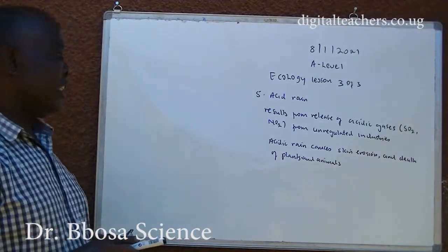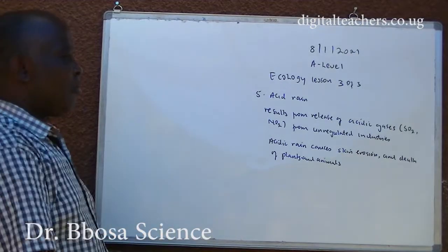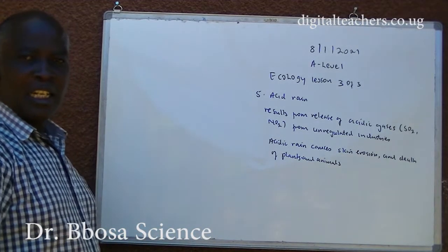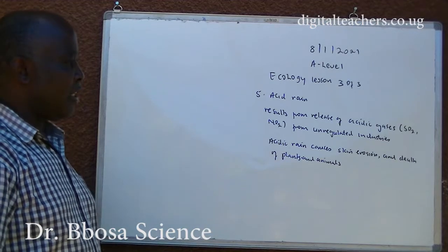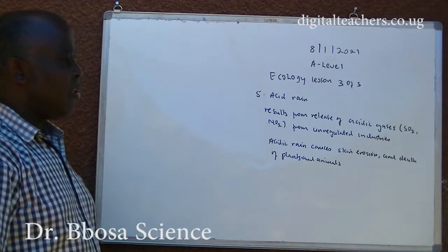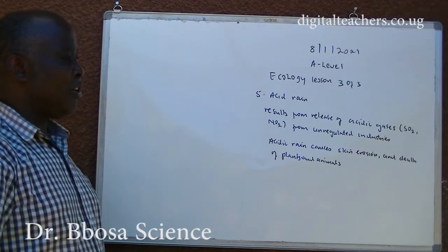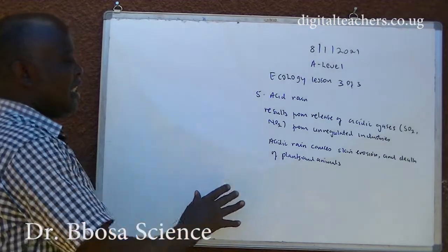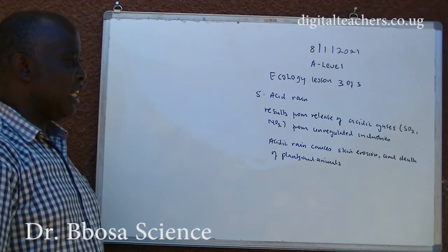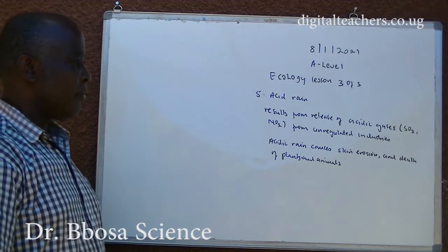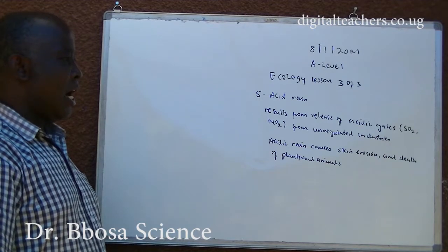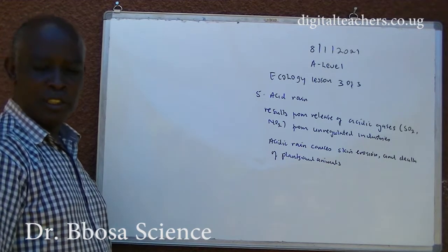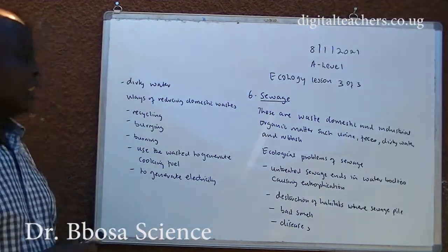Five: acid rain. Results from release of acidic gases, particularly sulfur dioxide and nitrogen dioxide, from unregulated industries. Acid rain causes soil erosion and death of plants and animals.